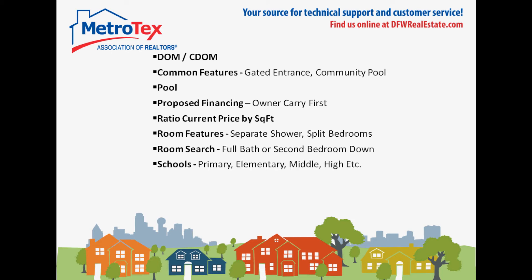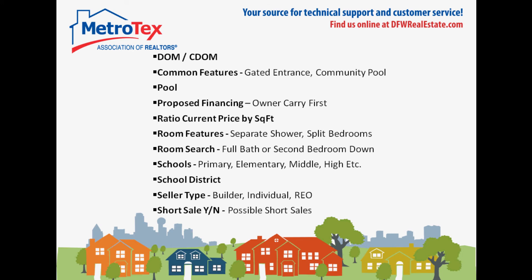Also being able to search by name for specific schools — a specific elementary school or high school, for example — as well as school districts. Seller type, being able to search for just builder properties or just REOs. Short sale yes or no — if a listing agent indicates that it's a possible short sale, you will be able to search by that.